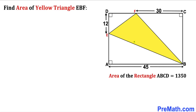Welcome to PreMath. In this video we have a yellow triangle EBF inscribed in a rectangle ABCD, as shown in the diagram. The side lengths given are 12, 30, and 45. Furthermore, the area of rectangle ABCD is 1350 square units, and we are going to find the area of this yellow triangle EBF.